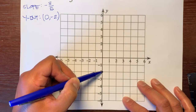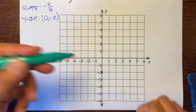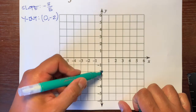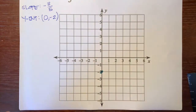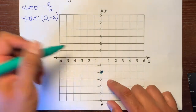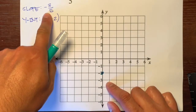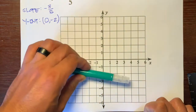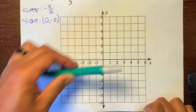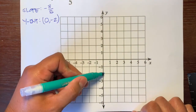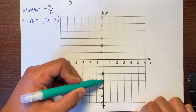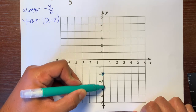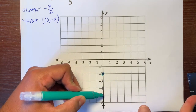We start at the origin and go to (0, negative 2) — down to negative 2 on the Y-axis. Now look at our slope: it's negative, meaning the line goes downhill. We go down 3 — 1, 2, 3 — and then run to the right 5: 1, 2, 3, 4, 5.